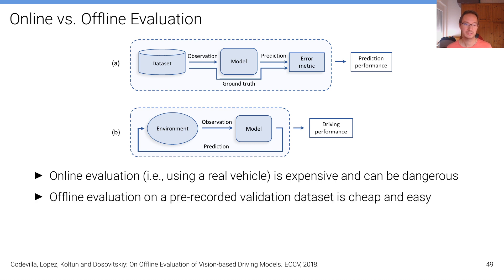But because that's expensive and dangerous, people in research papers often report offline evaluation metrics. Offline evaluation metrics can be computed based on pre-recorded validation datasets and are therefore cheap and easy. This is illustrated here on the top where we have a pre-recorded dataset that gives us an observation we input to our model but it also has the ground truth action and we can simply measure the error between the prediction of the model, say the steering angle should be minus 10 degrees or plus 10 degrees, and the ground truth steering error for that particular data point and use that as performance measure of our model.